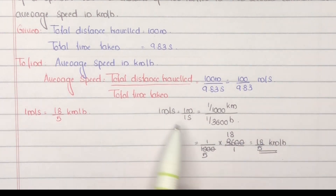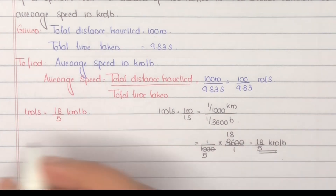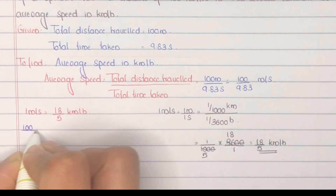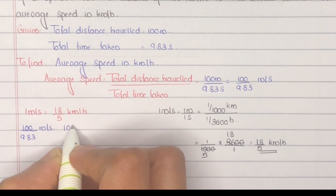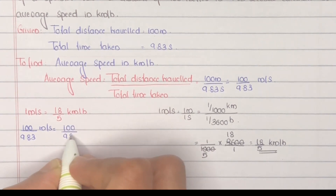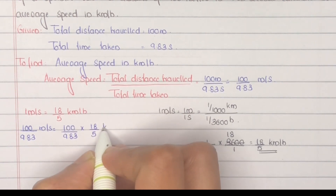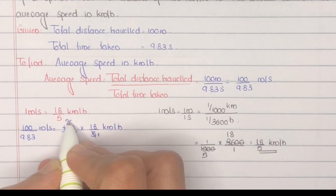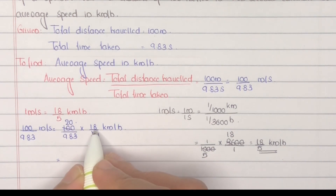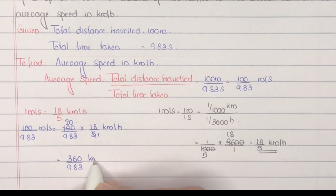So 1 meter per second equals 18 by 5 kilometers per hour. Therefore, 100 by 9.83 meters per second equals 100 by 9.83 multiplied by 18 by 5 kilometers per hour. Common terms cancel: 5 into 20 is 100, equal to 2 into 18, giving 360 by 9.83 kilometers per hour.